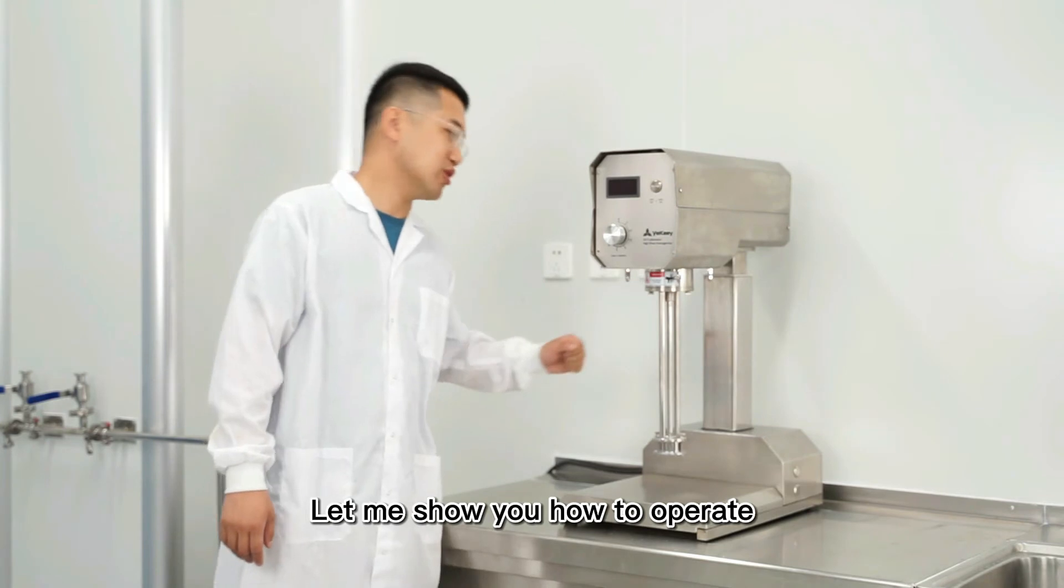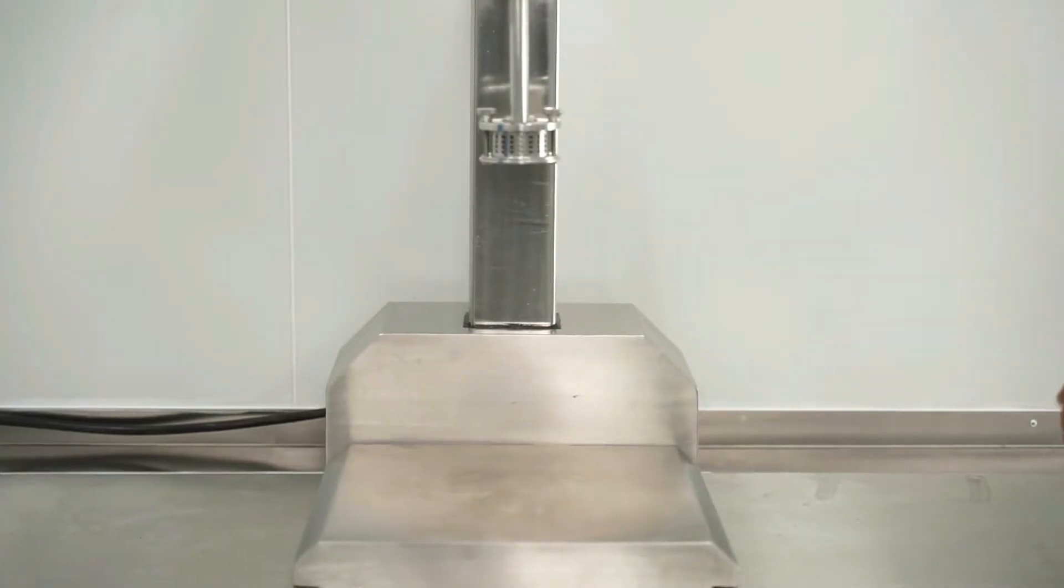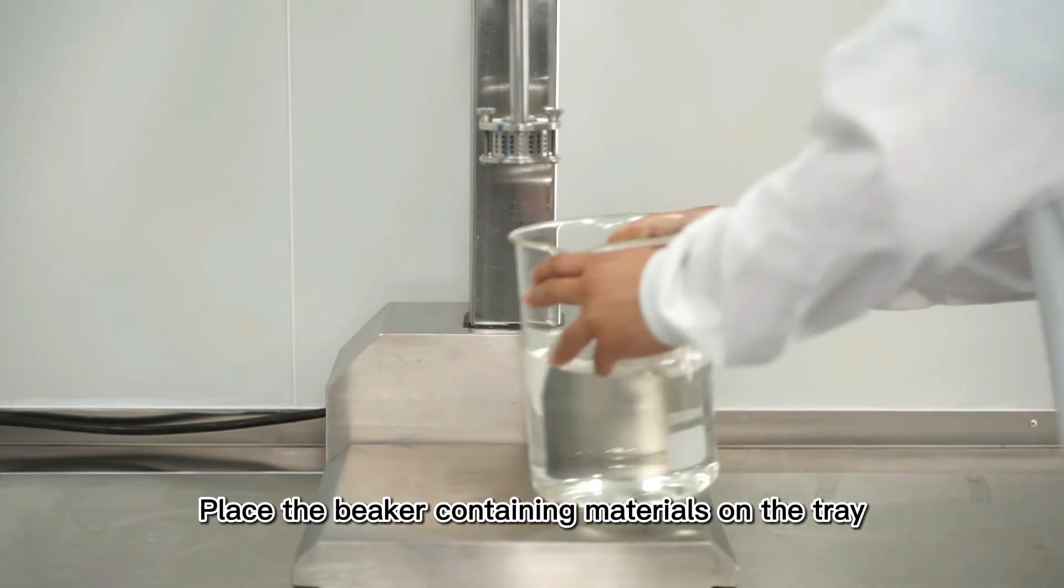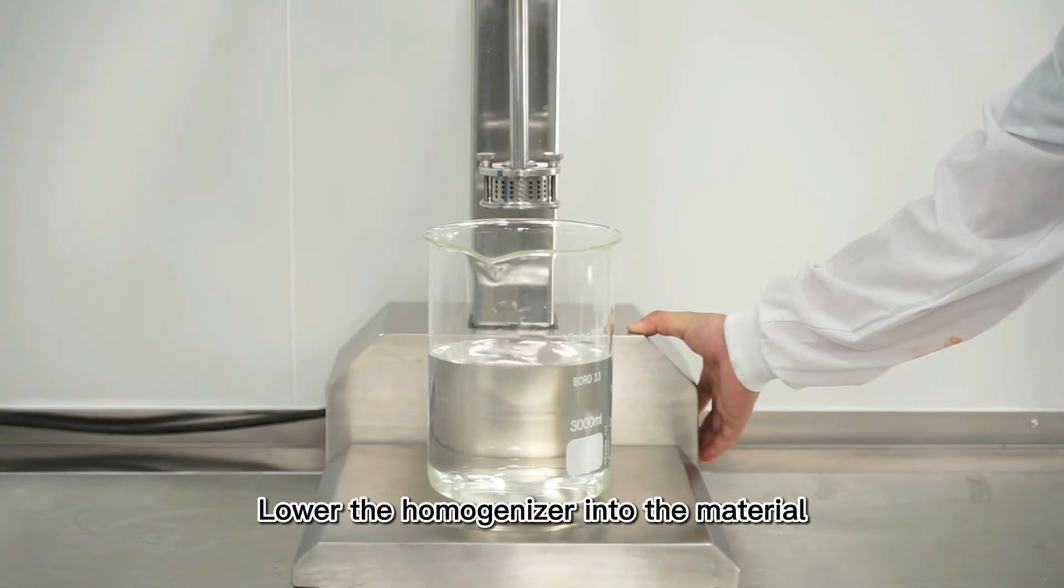Let me show you how to operate. Place the beaker containing materials on the tray, then lower the homogenizer into the material.